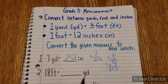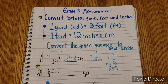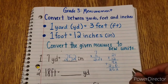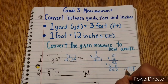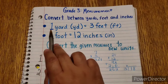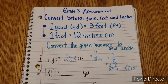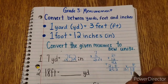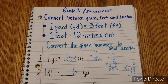Next, we have 18 feet and want to find how many yards that is. In 1 yard there are 3 feet, so we want to go from feet into yards. We take 18 and divide by 3. So 3 times what equals 18? That would be 6 — 3 times 6 equals 18, and 18 minus 18 equals 0. So the answer is 6 yards.